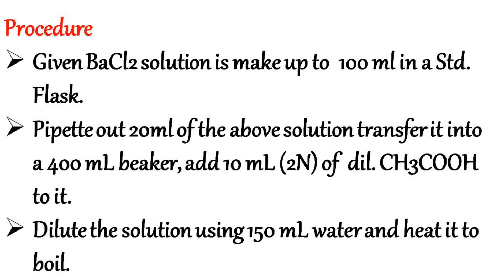Let us discuss the procedure involved in estimation of barium. The given barium chloride solution is made up to 100 ml in a standard flask. Pipette out 20 ml of the made-up solution and transfer into a 400 ml beaker. Add 10 ml of 2 normal dilute acetic acid to it. Dilute the solution using 150 ml water and heat it to boil.